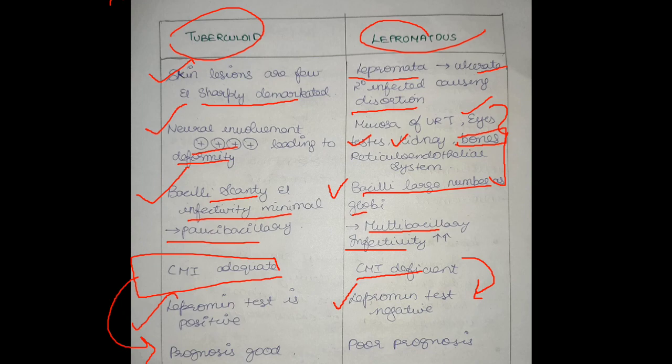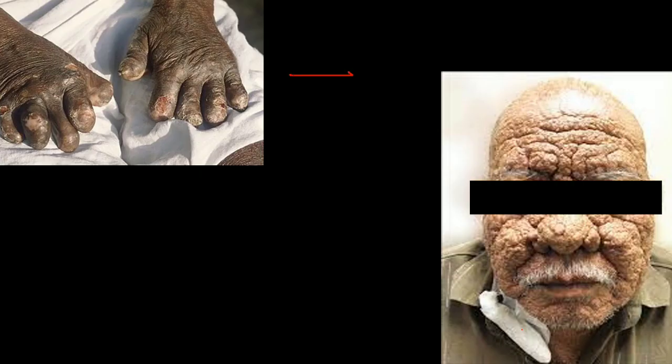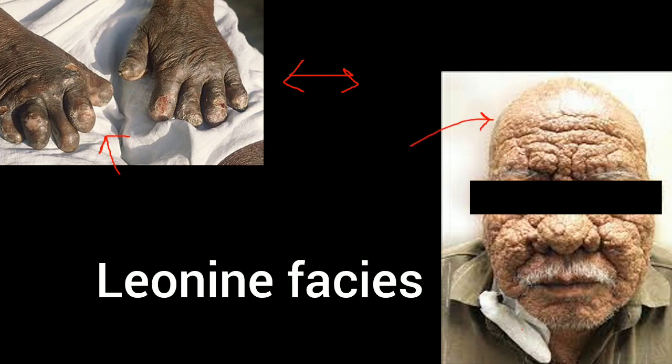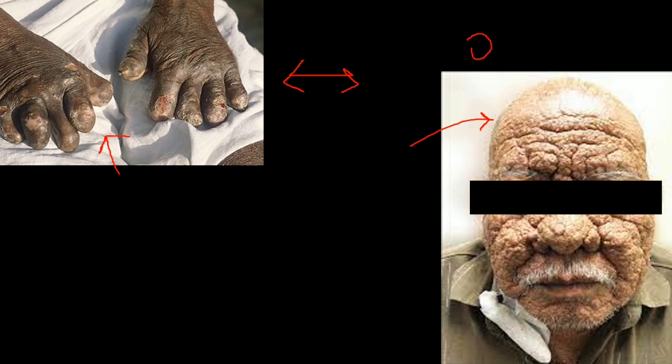This is the clinical image of lepromatous type showing bone resorption. It represents leonine facies. The lesions coalesce to form a thickened surface of the skin on the forehead as well as earlobes. This is the clinical image of leonine facies.